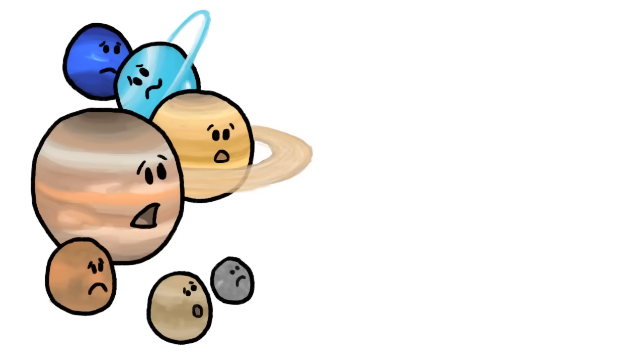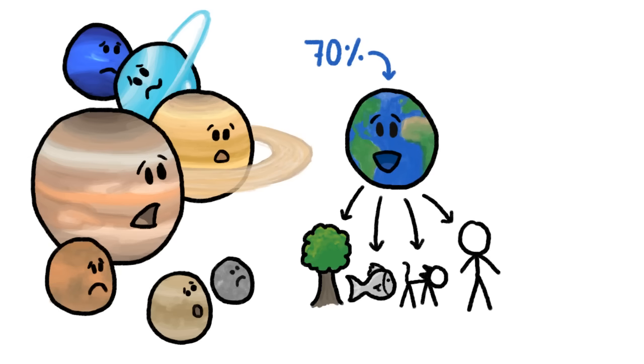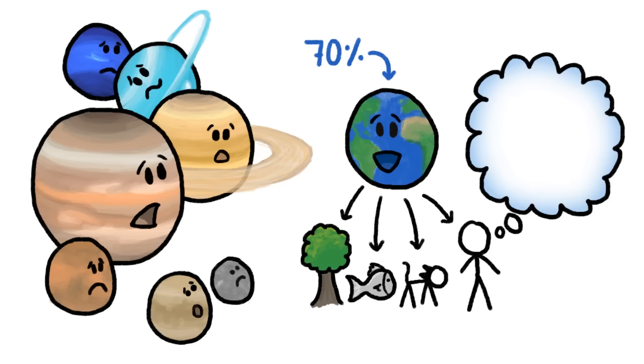Unlike every other planet in our solar system, Earth's surface is 70% liquid water, which while useful for life, is also kind of weird, because everything we know about how and when our planet formed says Earth's surface should be bone dry.